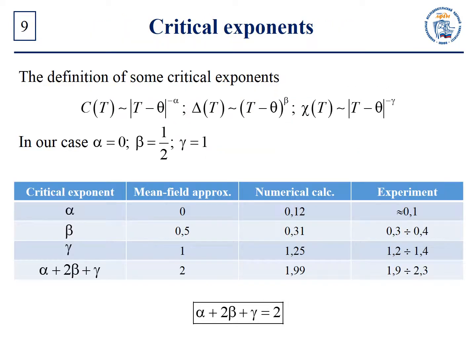Let us introduce the critical exponents. We obtained that as T tends to the Curie point, the magnetic susceptibility diverges by a power law, and the order parameter has a square-root singularity as T tends to the Curie point from the left. As for heat capacity, in the mean-field approximation it has an abrupt jump. Critical exponents alpha, beta, and gamma are denoted as follows. In the case of a ferromagnetic phase transition in the mean-field approximation, we have alpha equal to zero, beta equal to one-half, and gamma equal to one.